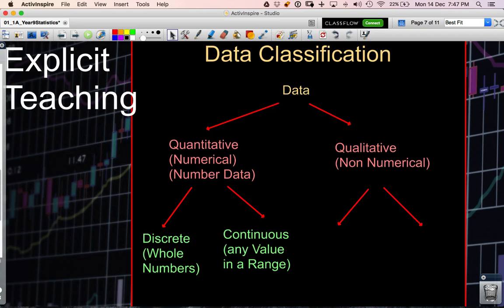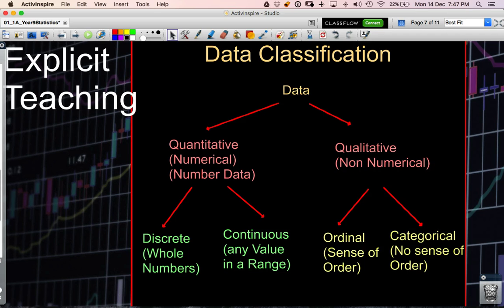Now our non-numerical data can be either ordinal which is data which has a sense of order, you can see the word order in ordinal, or categorical where our data has no sense of order.